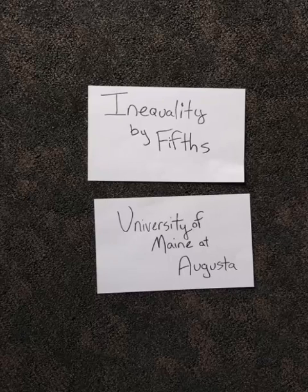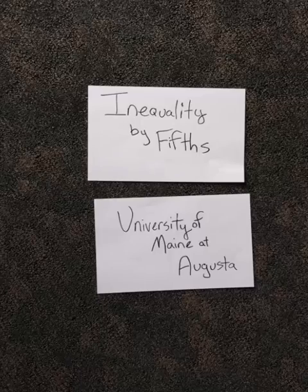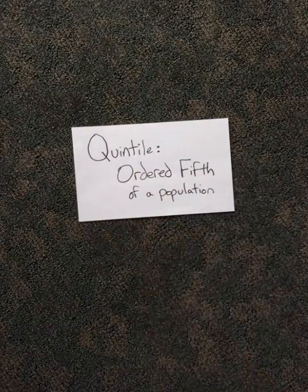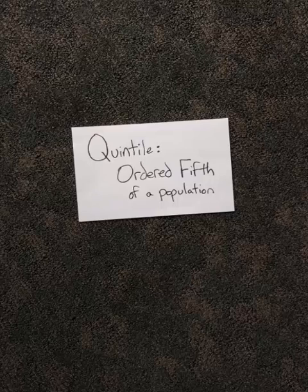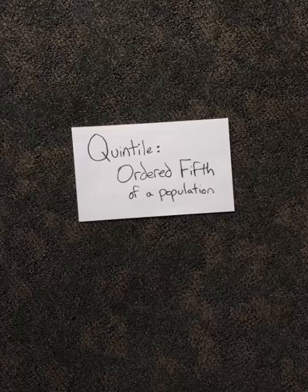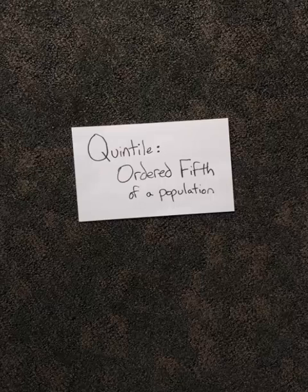How do we think about layers? We think about layers in terms of quintiles. A quintile is nothing more than an ordered fifth of a population. You put a population into order from highest to lowest, and then you divide them into fifths — units of 20% of the population. That's all a quintile is. This is just one of three definitions you'll need to know to understand what's going on in this video.